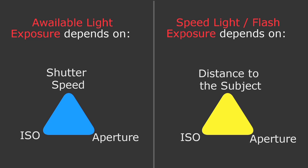Here's something important to remember: every picture you take with flash has two exposures in it. One is the ambient light exposure and the second is the flash light exposure. Our available light exposure depends on ISO, aperture, and shutter speed — just like a regular exposure without flash. On the other hand, flash exposure depends on ISO and aperture, but is totally not influenced by shutter speed.